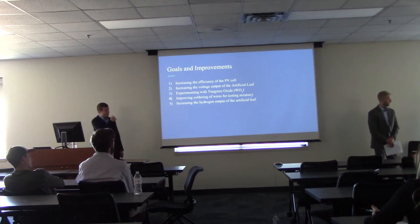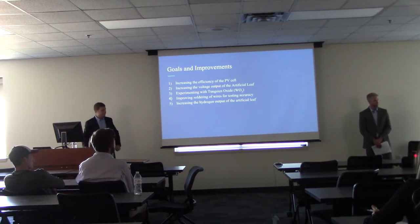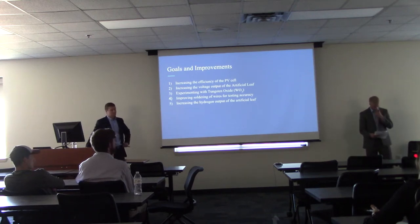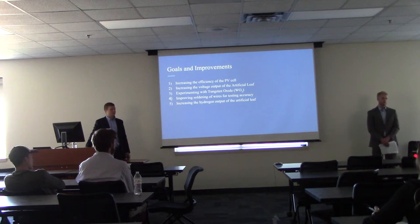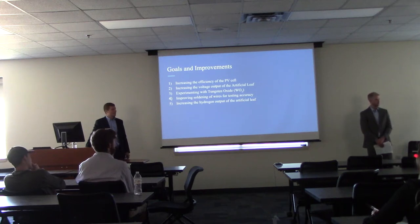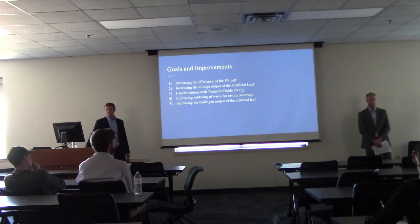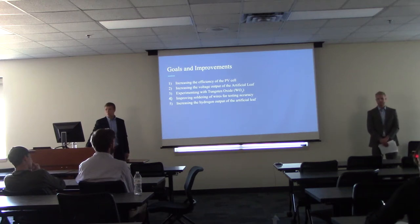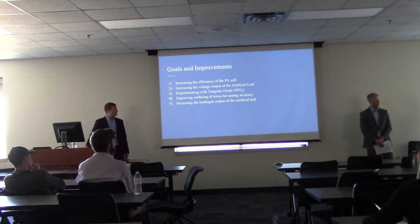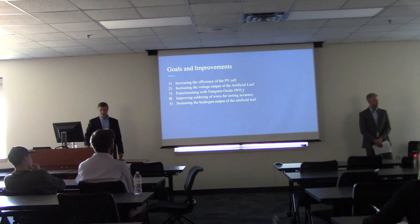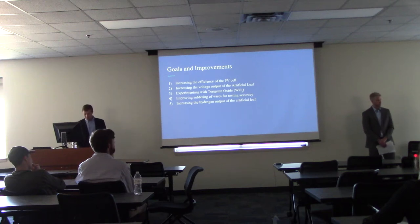Our goals and improvements: number one, increase the efficiency of the photovoltaic cell; number two, increase the voltage output of the artificial leaf. We experimented with tungsten oxide on about half of our leaves — it's a material some believe improves photovoltaic characteristics. We also improved the soldering of wires for more accurate testing. All of these contribute to the main goal of increasing the hydrogen output of the artificial leaf.